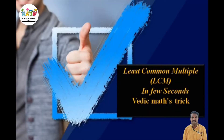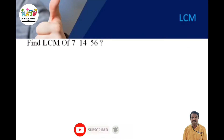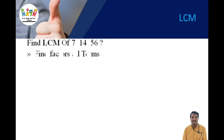LCM stands for Least Common Multiple. We can talk about a poetic mathematical trick. Let's take one example: find the LCM of 7, 14, and 56. In this method, we solve step by step to find the factors of all terms — we have to find the factors of 7, 14, and 56.